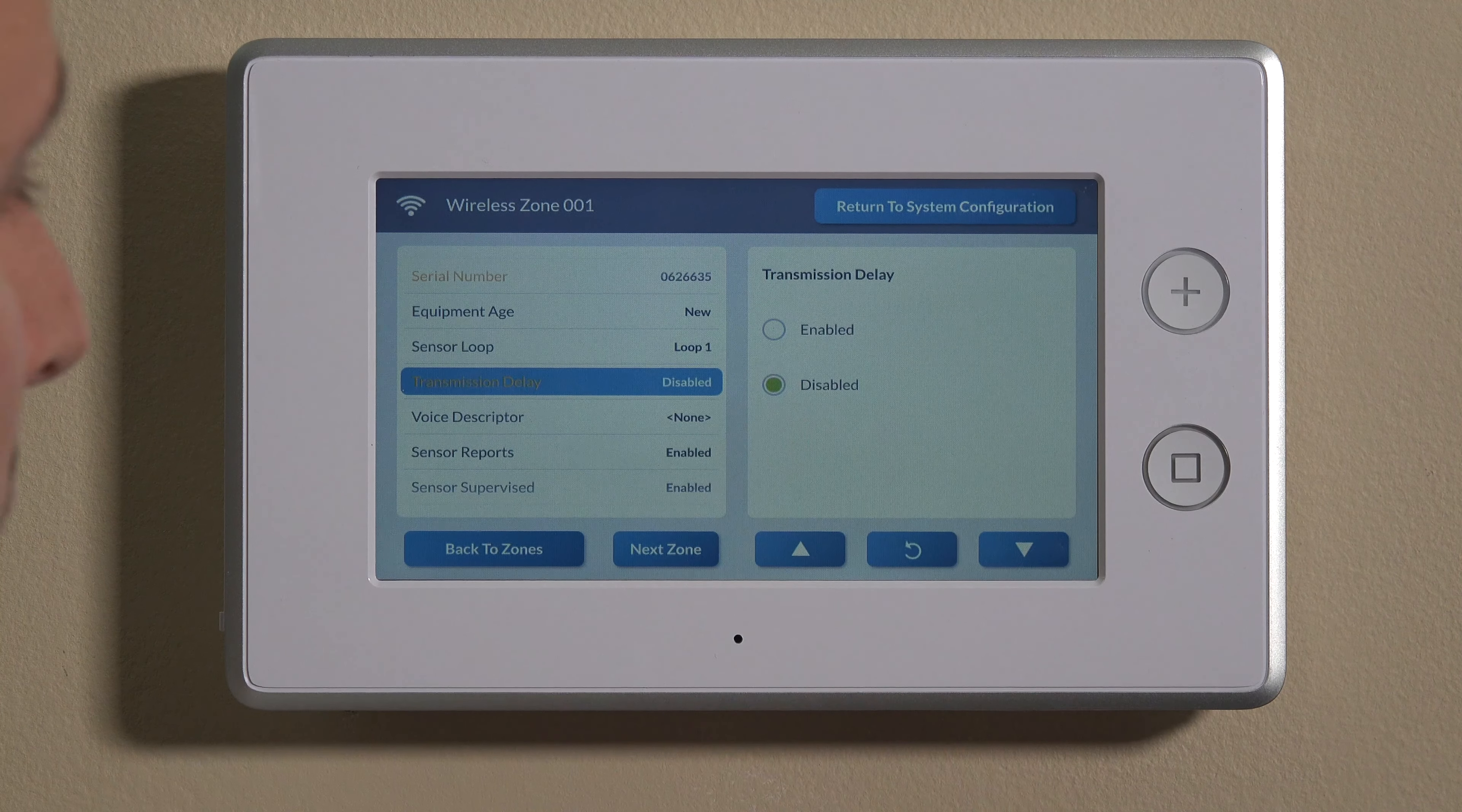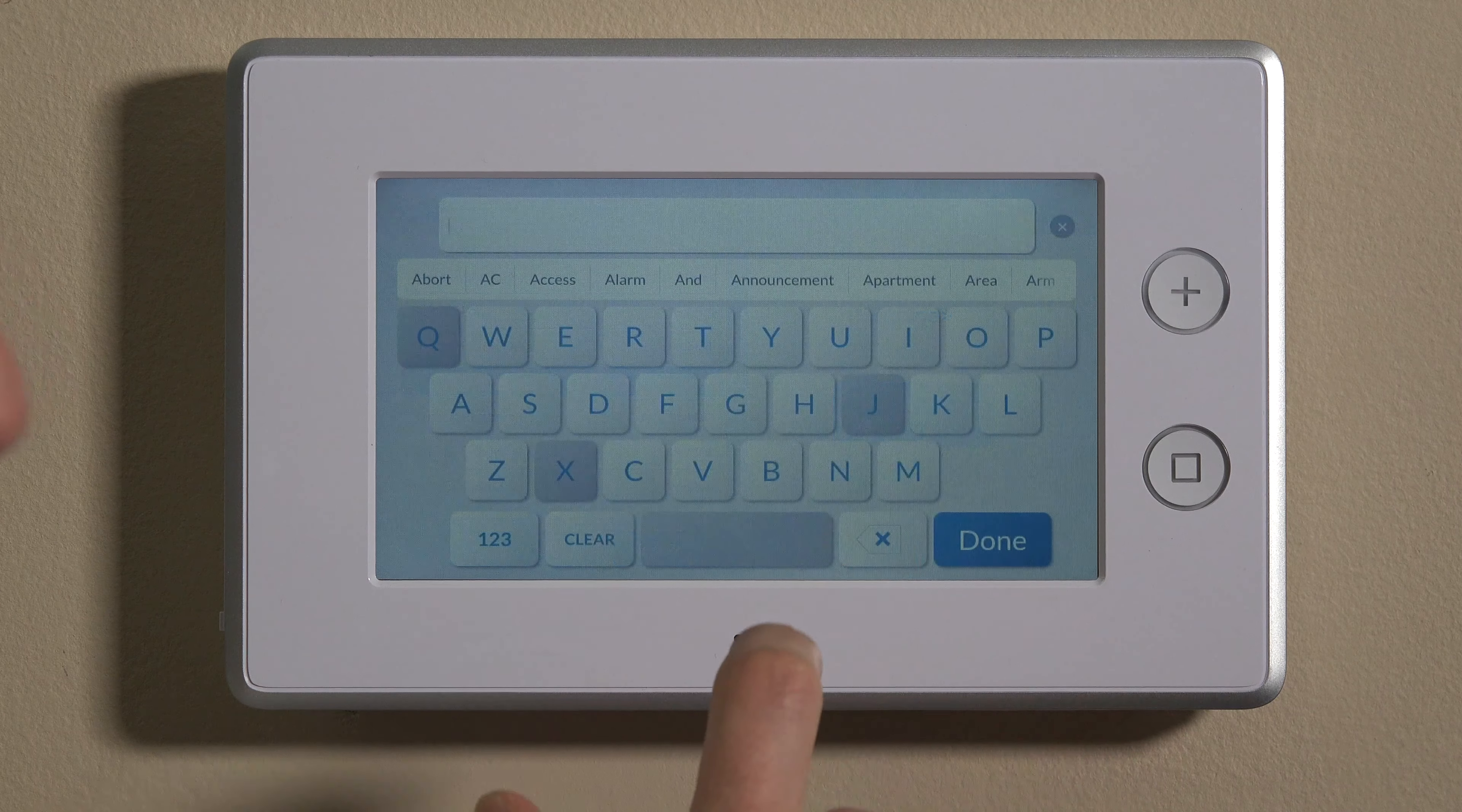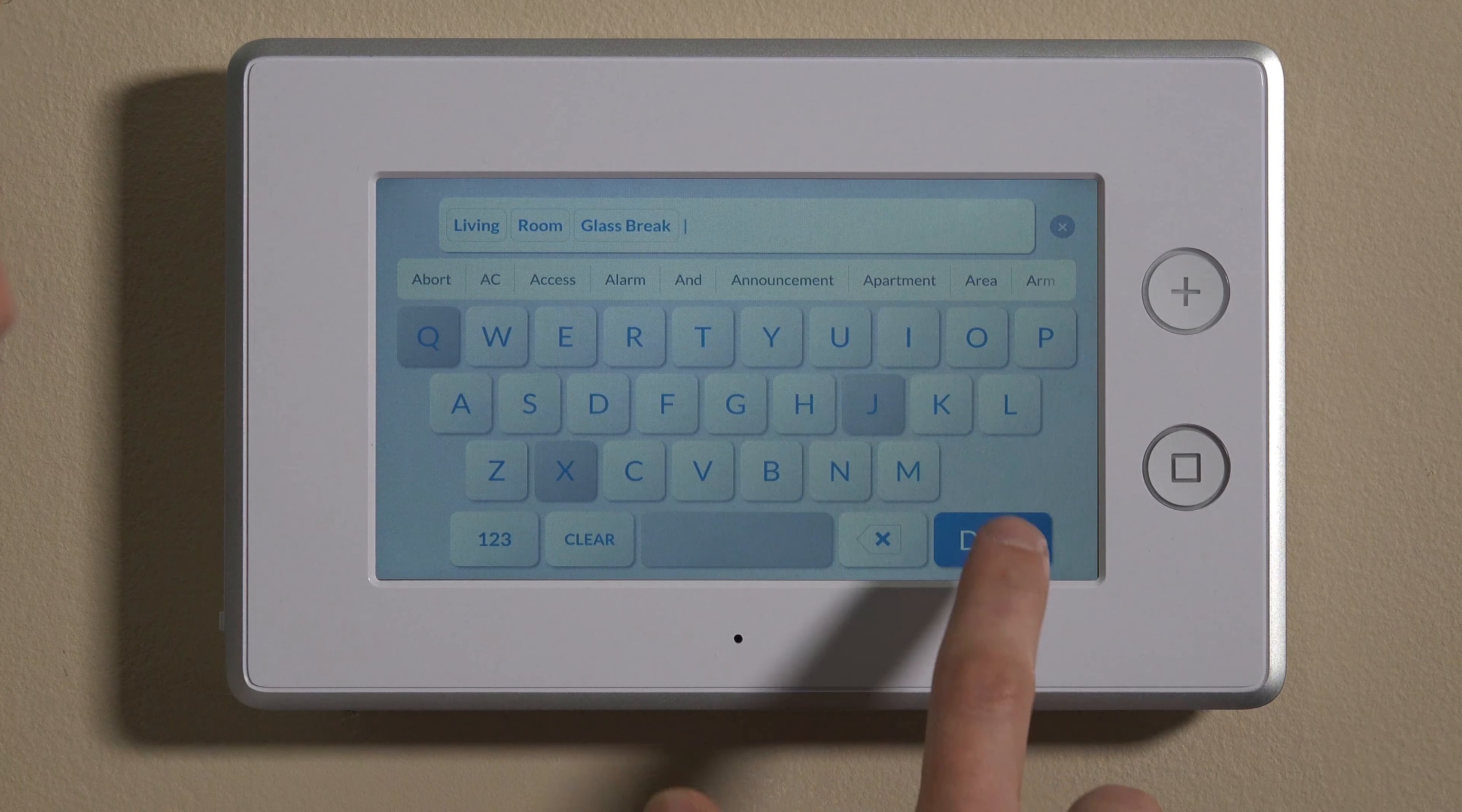Transmission delay, we'll disable that, as discussed in our other videos. We always want to disable that so that when there's an alarm we get the alarm immediately. If for whatever reason you've had false alarms in this particular zone before, or you're just trying to be very cautious around false alarms, maybe there's high fines in your area, you can keep that enabled if you want. And that will map to the transmission delay period listed in the panel programming. So we'll go to Voice Descriptor and then hit Edit Voice Descriptor. So we'll label this as the living room glass break. So we'll do living room glass break there. We'll hit Done.